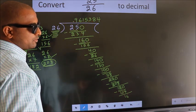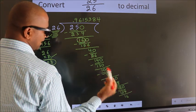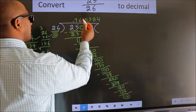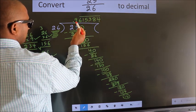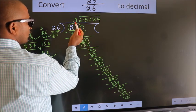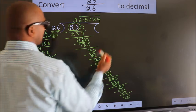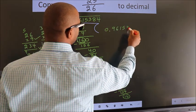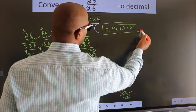Now observe: we had 16 here earlier, and we got 16 again. That means we get a bar on these repeating numbers. We do not put the bar on the starting number, as we did not get that number first — we got 16. So do not put bar on the starting number. Therefore, our answer is 0.9615384 with a bar on these repeating digits. This is our answer.